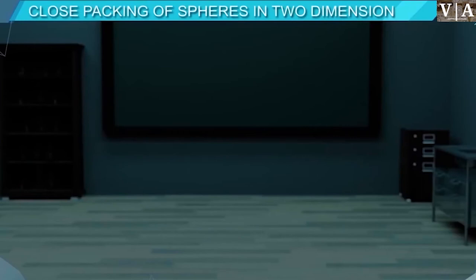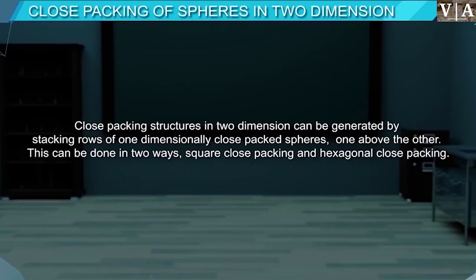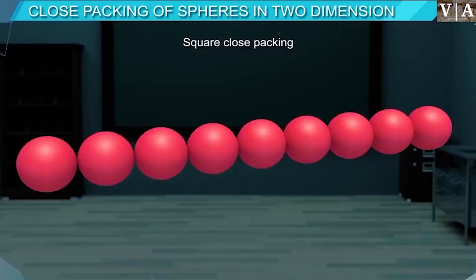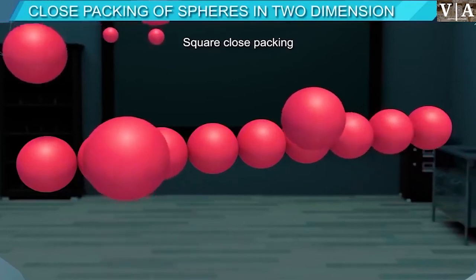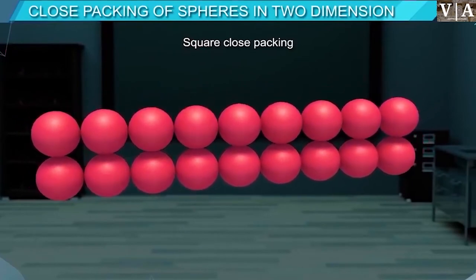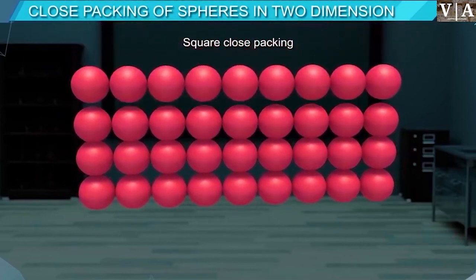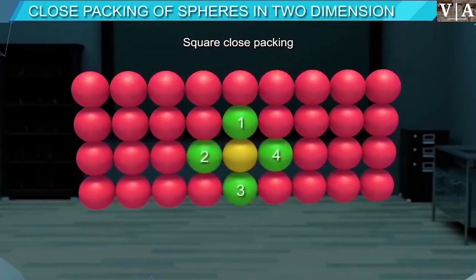Close packing of spheres in two dimensions can be generated by stacking rows of one-dimensionally close-packed spheres one above the other. This can be done in two ways: square close packing and hexagonal close packing. In square close packing, the second row is placed such that spheres of the second row are exactly above the spheres of the first row. The spheres are aligned horizontally and vertically, and each sphere is in contact with four spheres, so the coordination number is 4.